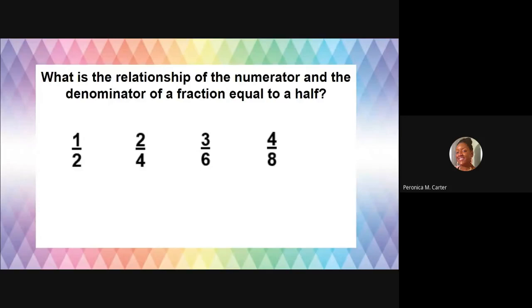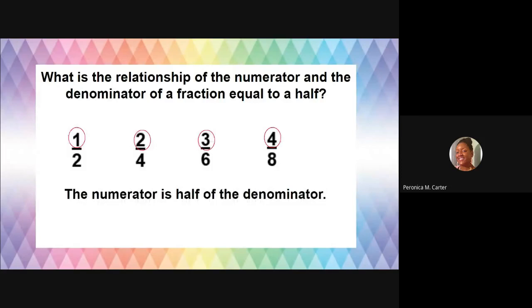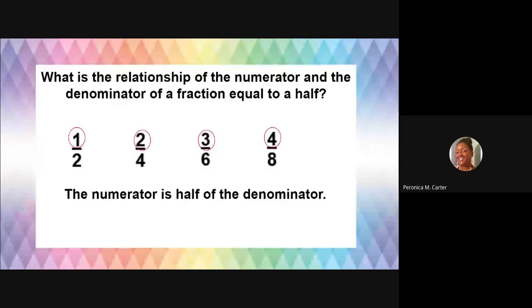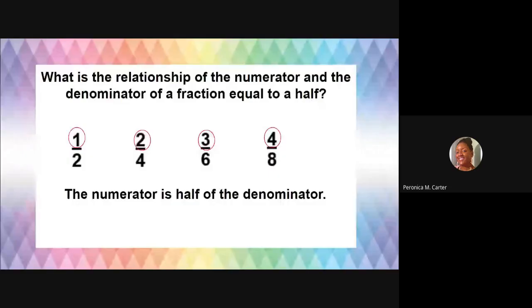Four and eight. The numerator is half of the denominator, which makes sense because we're talking about the value of half of something. Whether we had a denominator that was a hundred or if it's just four, we're talking about the portion that's half of that — half of the numerator. One is half of two. Two is half of four. Three is half of six. And four is half of eight. So now we know all the fractions in the world that are equal to a half, because anything equal to a half has a numerator that is half of the denominator.